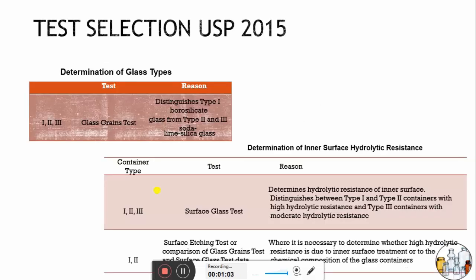Starting with selection of tests according to USP 2015. For determination of glass type, the first test is the glass grain test. The glass grain test is usually used to distinguish Type 1, that is borosilicate glass, from Type 2 and Type 3, that is treated soda lime glass and soda lime silica glass.